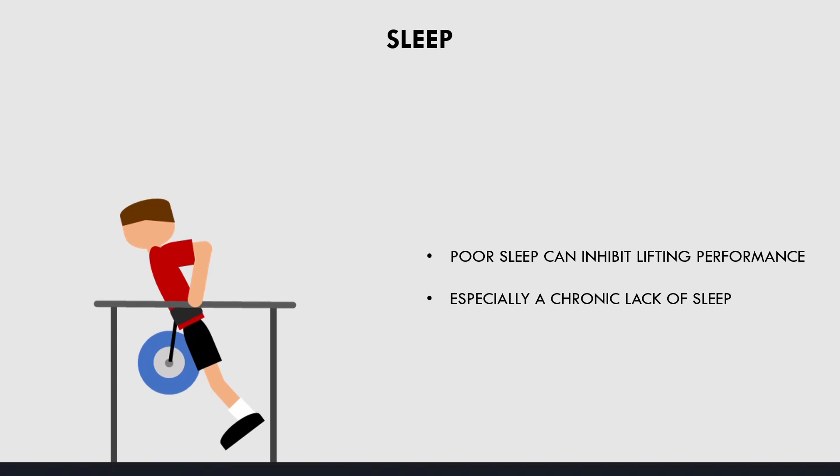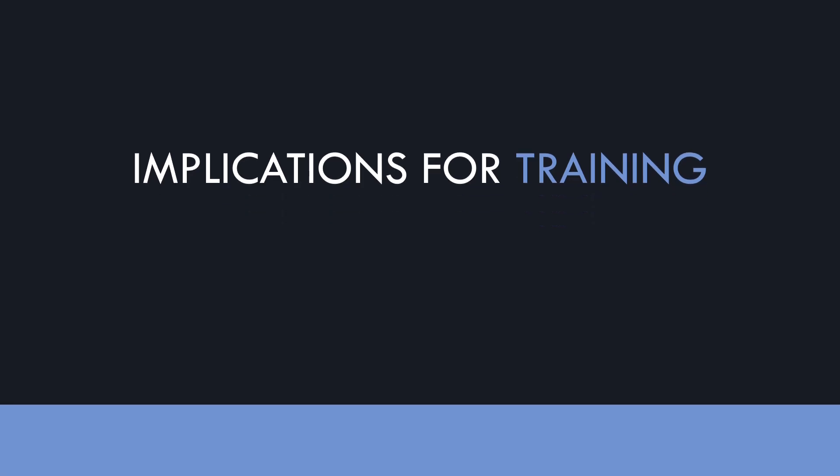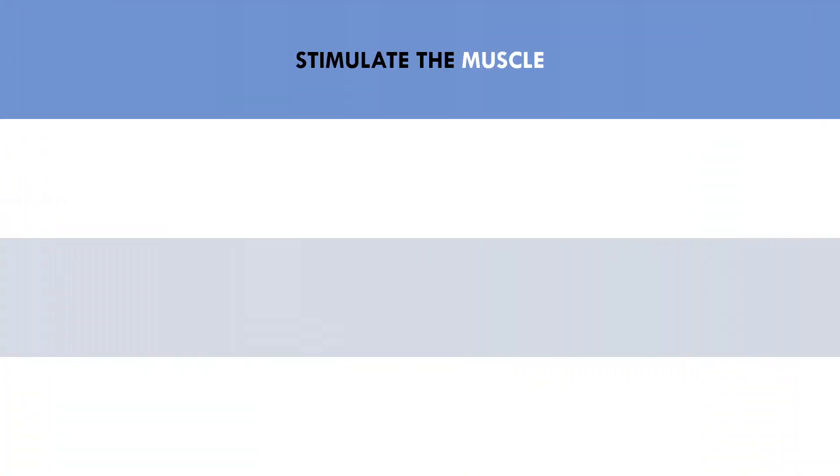So what does all of this mean with reference to hypertrophy training? Well there are a few implications this has for training and tracking lifting performance. The first implication is to make sure that we are actually stimulating the target muscle in each session. This means the focus should be to perform the exercise in the most effective way. This means the goal is not to try and beat last week's performance at all costs, it is to get the most out of training with the session that you have planned.